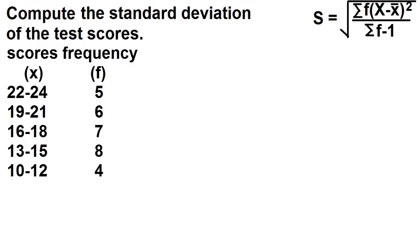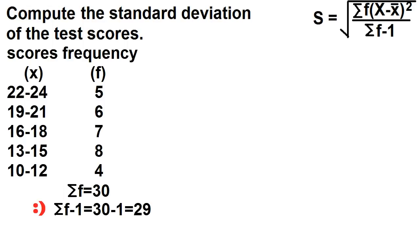The total frequency is 5 plus 6 plus 7 plus 8 plus 4, which is equal to 30. And the total frequency minus 1 equals 30 minus 1, which is equal to 29.